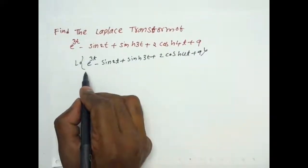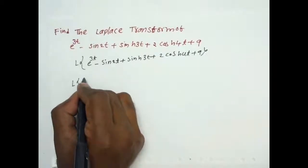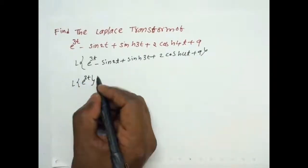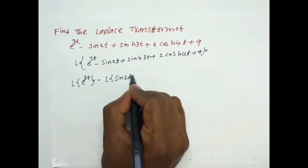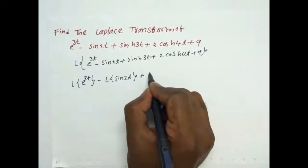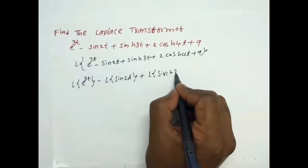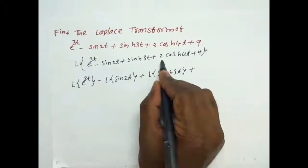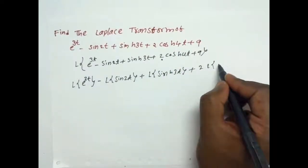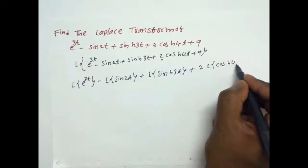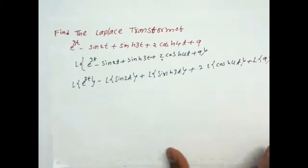Now apply the Laplace individually. We have to write the Laplace transform of e^(3t) minus Laplace of sin(2t) plus Laplace of sinh(3t). Here we have 2 as a constant, then write 2 into Laplace of cosh(4t) plus Laplace of 9.